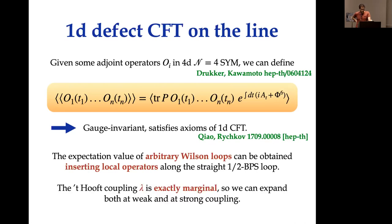Another comment about this 1D theory is that we are in the planar limit, and N=4 admits a marginal coupling — we take this to be the 't Hooft coupling lambda. So we have a 1D theory with this marginal parameter, and it will be interesting to consider analytically both the weak coupling and strong coupling regimes. We will focus mostly on strong coupling but will also discuss some weak coupling results.